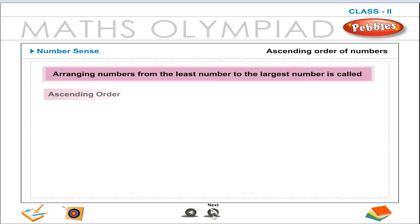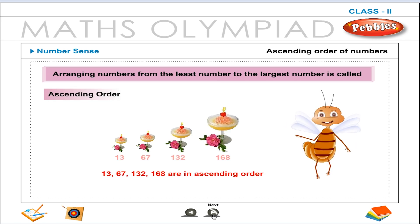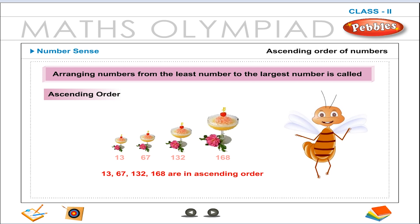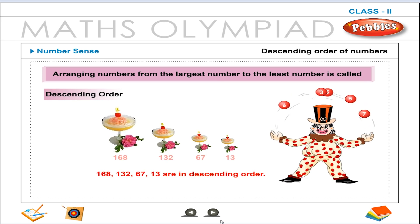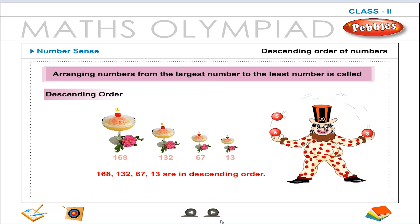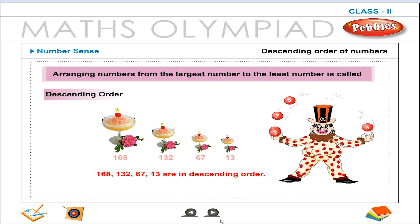Ascending order of numbers: Arranging numbers from the least number to the largest number is called ascending order. Descending order of numbers: Arranging numbers from the largest number to the least number is called descending order. Example: 168, 132, 67, 13 are in descending order.